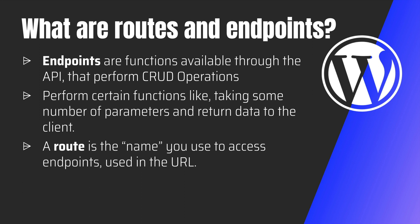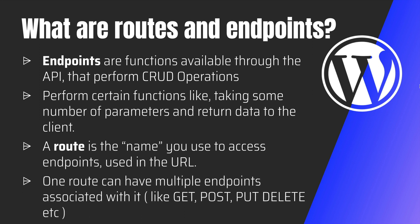A route is the name that you use to access these endpoints, and it is used in the URL. When you are creating your endpoints, each has a certain route which allows WordPress to know which endpoint needs to be called and what type of operation needs to be performed. It's important to note that one route can have multiple endpoints associated with it — a route can be of type GET to get data, or type POST for sending data to WordPress.